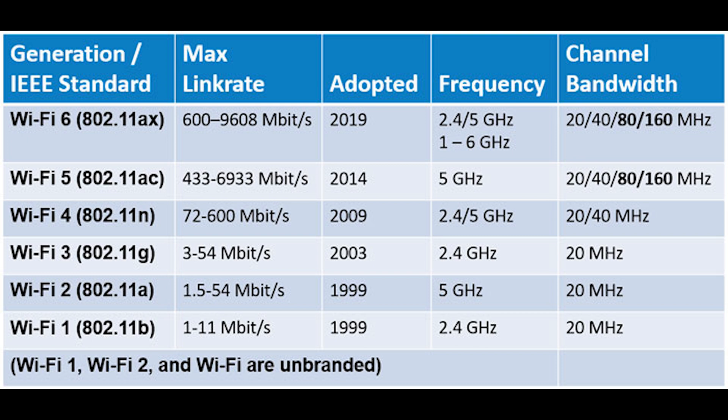802.11ac, known as Wi-Fi 5, operates in the 5 gigahertz range, while 802.11ax, known as Wi-Fi 6, can use either the 2.4 gigahertz or 5 gigahertz ranges.